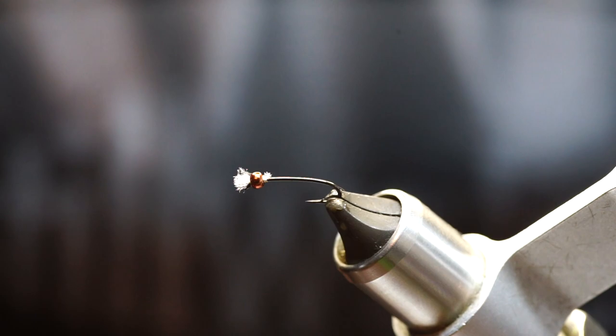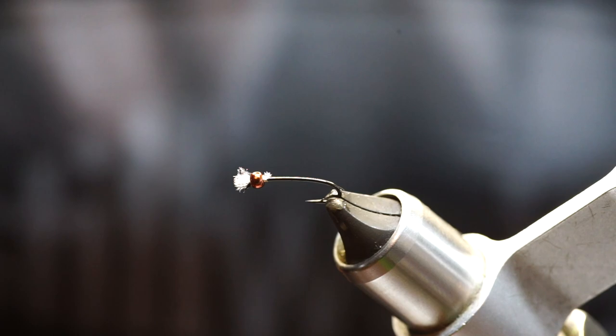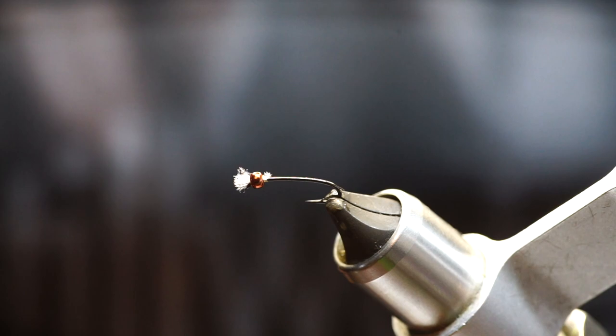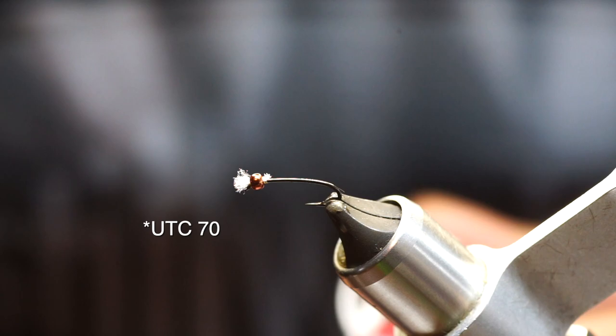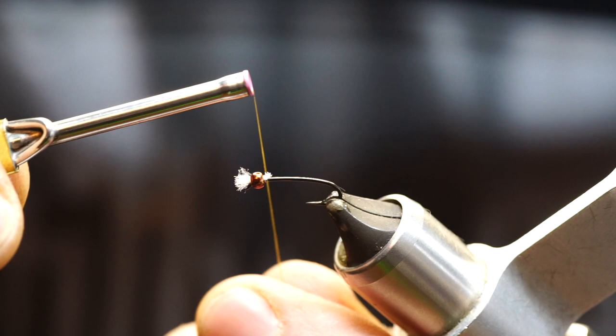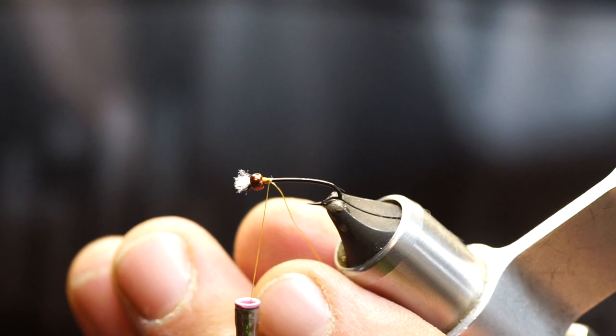So now, to do a blending technique, you want to think about which color you want at the tail, and which color you want it to fade into. So you want to start with the material that's going to be visible at the tail. So, in this case, I am using UTC 70 in wood duck. And I'm going to tie in right behind the bead to catch the thread.